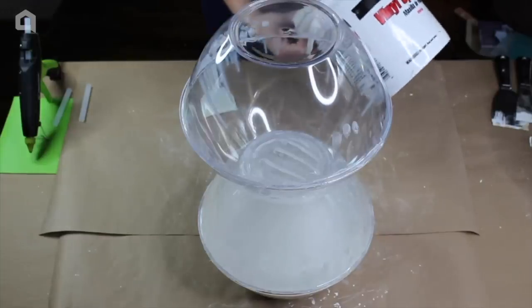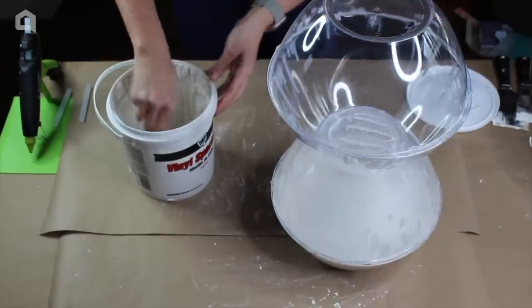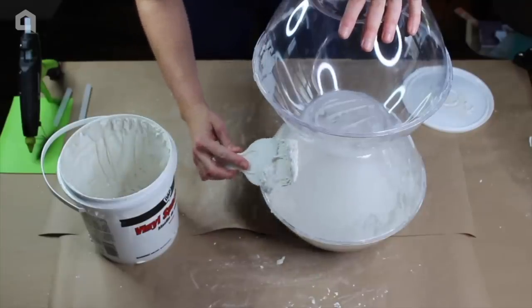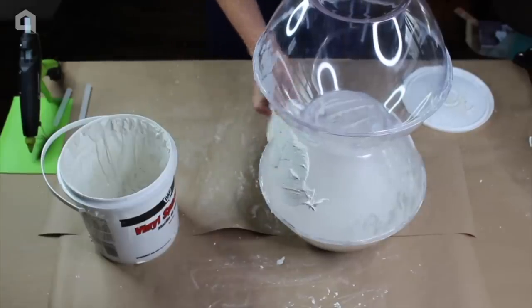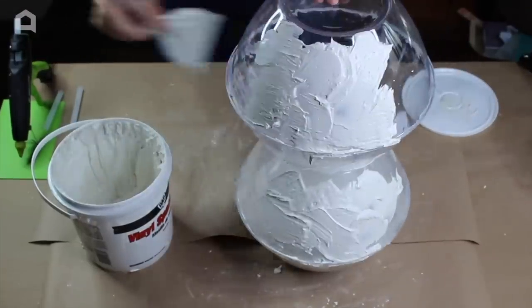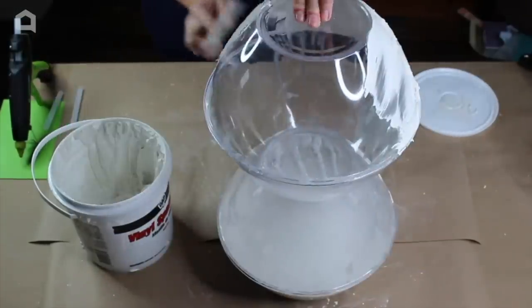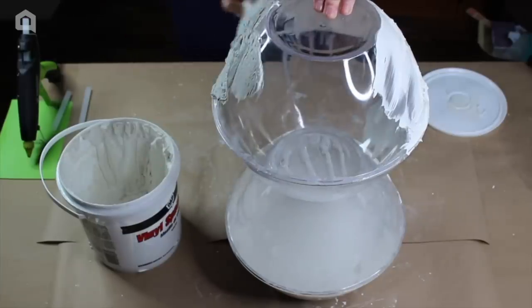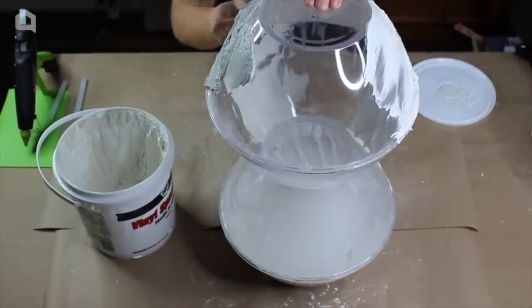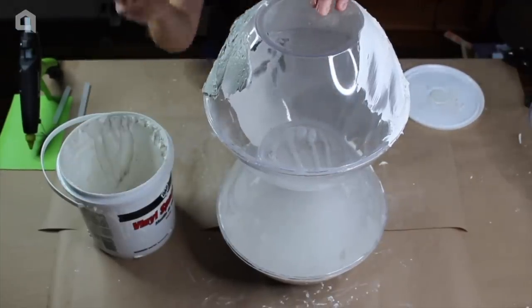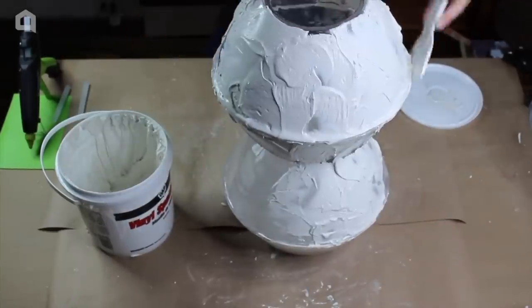Alright. So now I'm going to be using some vinyl spackle. So this spackle is already a white color. We are going to start adding spackle to the surface. And it doesn't need to be super neat. You can make it a little messy, just add a lot of texture. So I'm putting a lot on and then I'm kind of letting it kind of drop down, but also trying to even it out as I go. So we're just going to keep going all the way around until this whole stack of bowls is covered. And then we will be back for the next step.